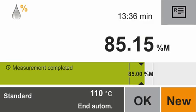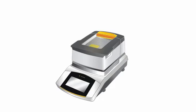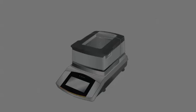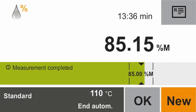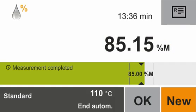When the moisture analysis is completed, you hear a signal. The light flashes three times and turns off afterwards. The results of the moisture analysis are displayed. This sample has a moisture content of 85.15%. You also have the option to get a printout of the protocol of the actual measurement via the report function.